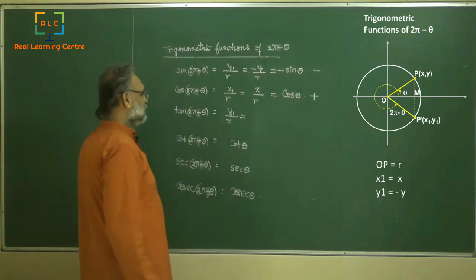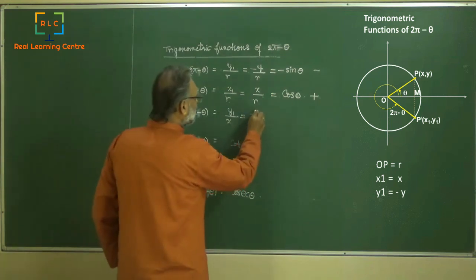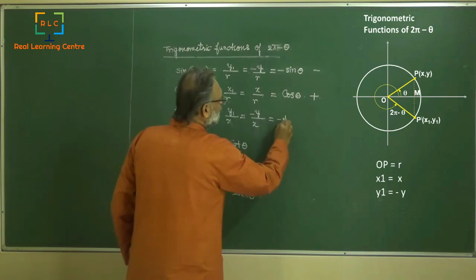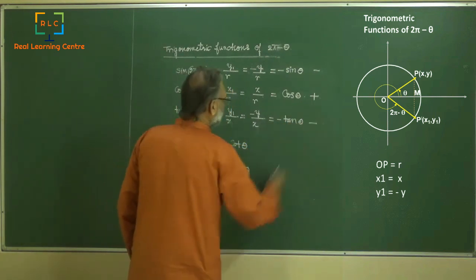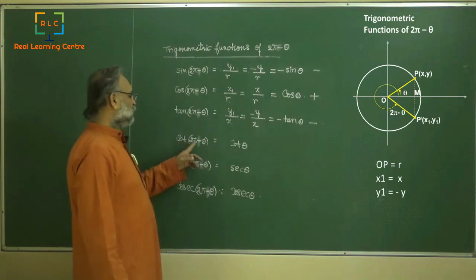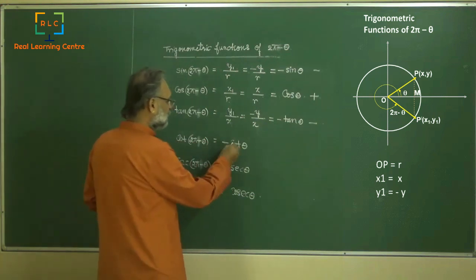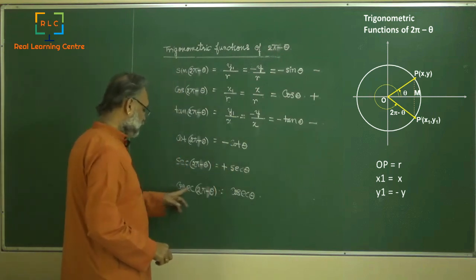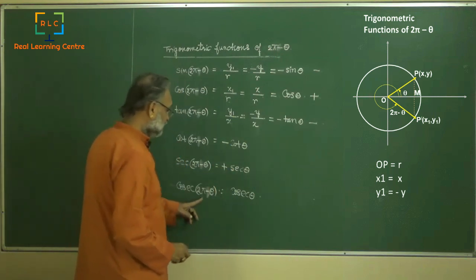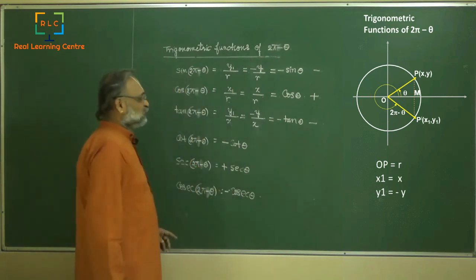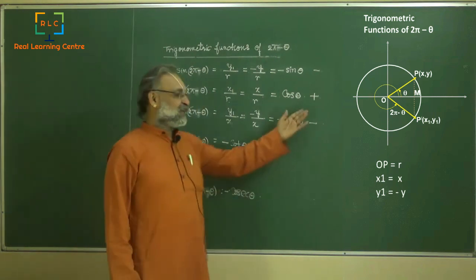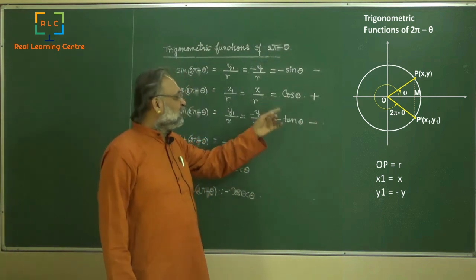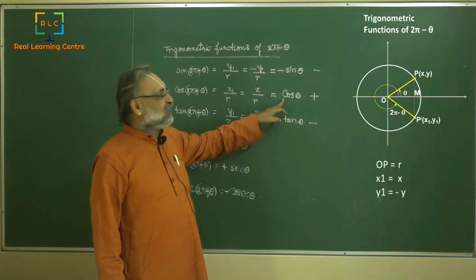Tan(2π − θ) equals y1/x1 equals minus y/x, which equals minus tan θ — negative. Cot(2π − θ) equals minus cot θ. Sec(2π − θ) equals plus sec θ. Cosec(2π − θ) equals minus cosec θ. The speciality of the fourth quadrant is that only cos is positive.